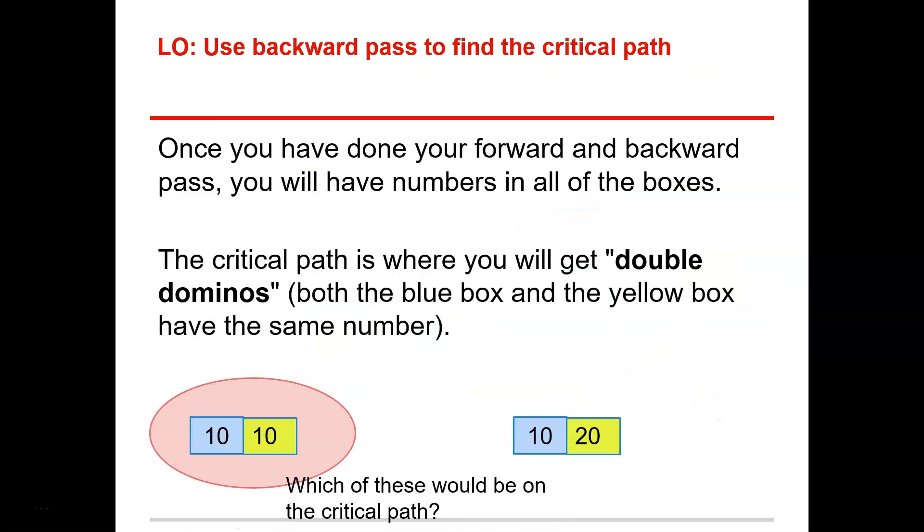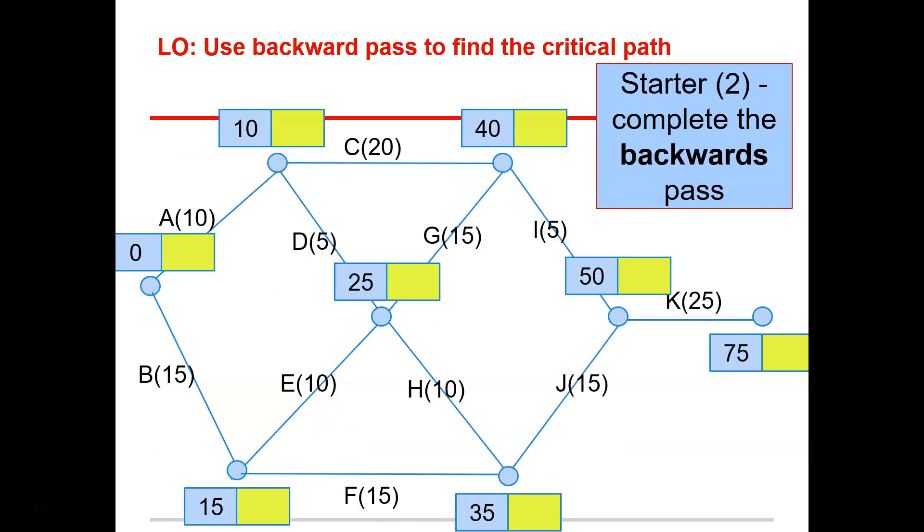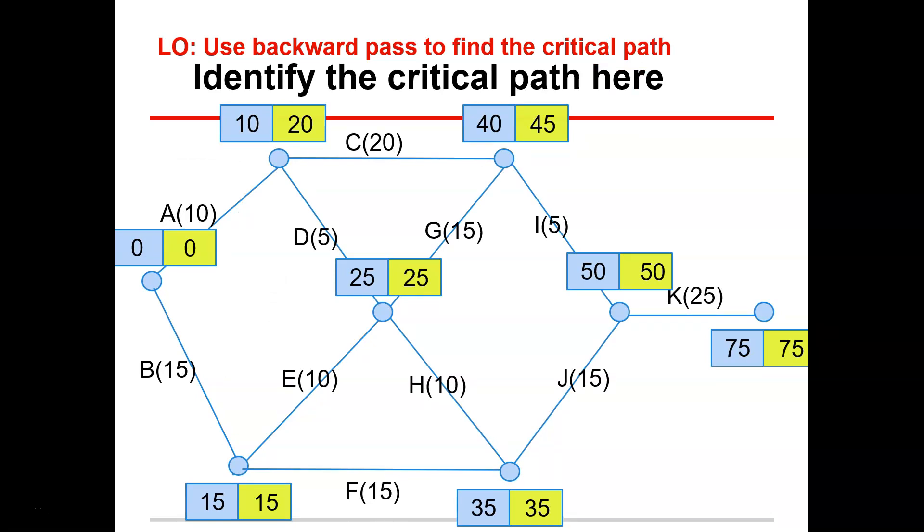So there's a few more examples in there, but I'm going to skip through those and have a look at what I just explained to you by finding the critical path. So once you've done your forward and backwards path, you have numbers in your boxes. So the critical path is where you get the double dominoes. That's a good way to put it. So where both the numbers are the same. So like we did before, we could find them. So for this one, for example, it would be K here, then I,